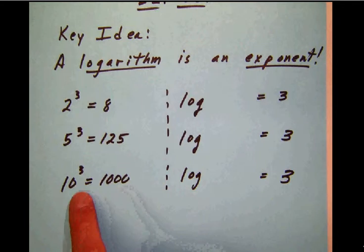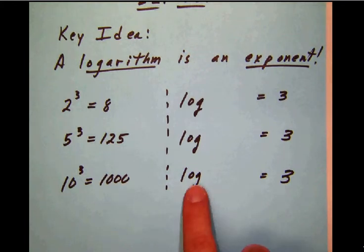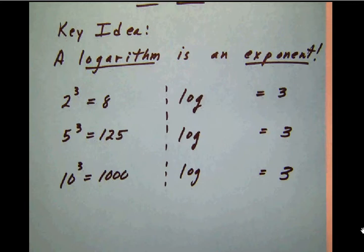Over here, log to the base, well, the 10 to the third power is 1,000. So the logarithm here is 3. Now, we can sort of guess there has to be a little bit more to this. So it's true. A logarithm is an exponent.